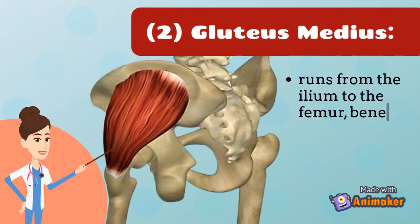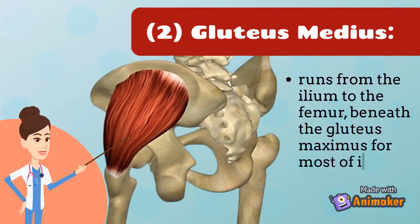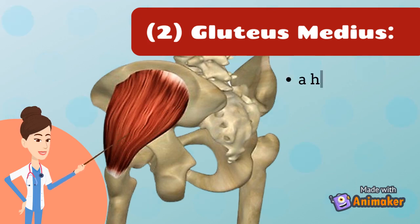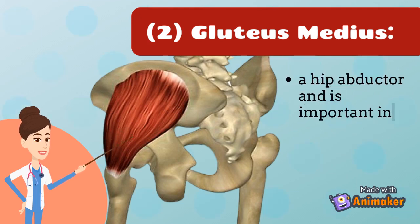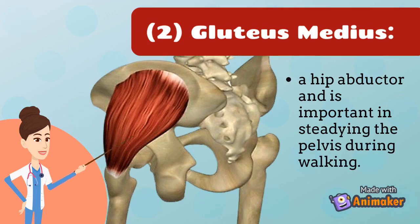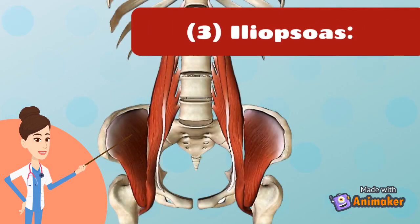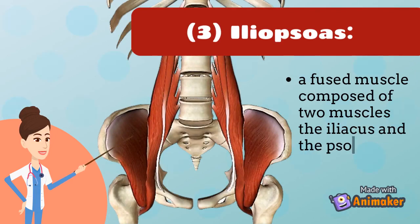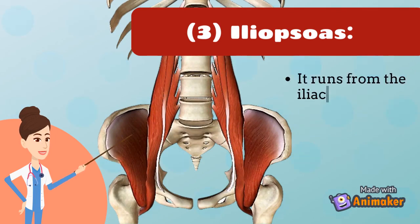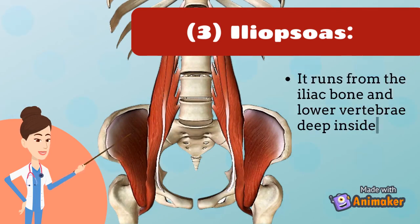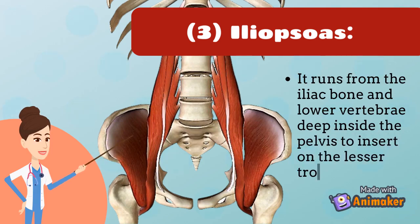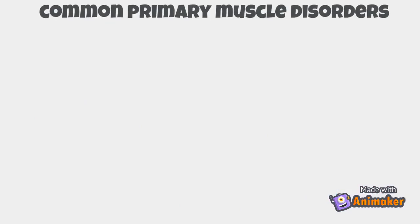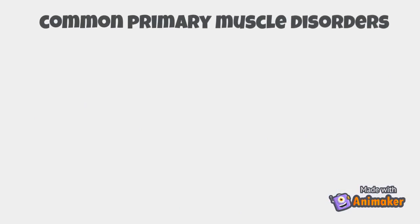The second lower limb muscle is the gluteus medius, which runs from the ilium to the femur beneath the gluteus maximus. The gluteus medius is a hip abductor and is important in stabilizing the pelvis during walking. The third is the iliopsoas — a fused muscle composed of two muscles, the iliacus and the psoas major. It runs from the iliac bone and lower vertebrae, deep inside the pelvis, to insert on the femur, and is a primary hip flexor.